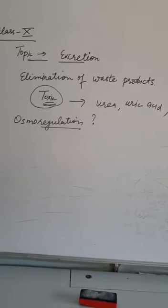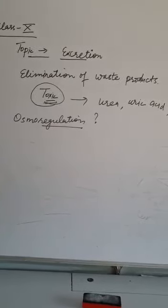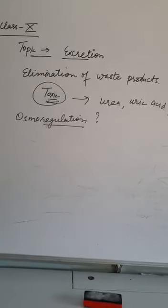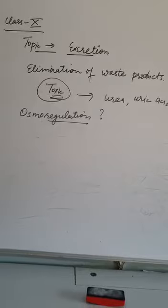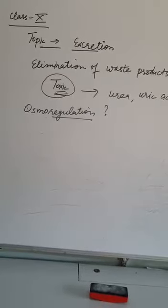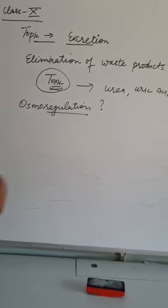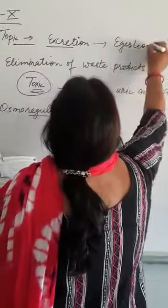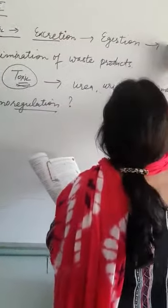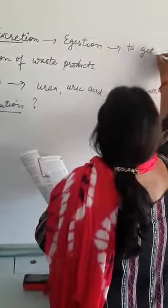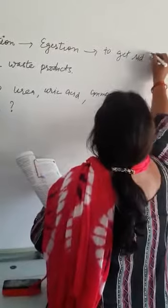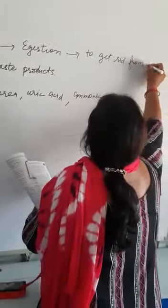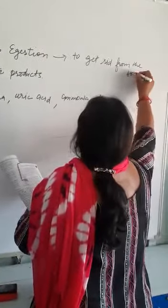Excretion system is a system of organs and tissue which takes part in the separation, collection and voiding of the waste products from the body.